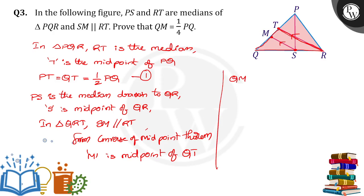Then QM is equal to half of QT. Half of QT is equal to half of PQ, so 1 by 2 into 1 by 2 PQ. We get QM is equal to 1 by 4 times of PQ.